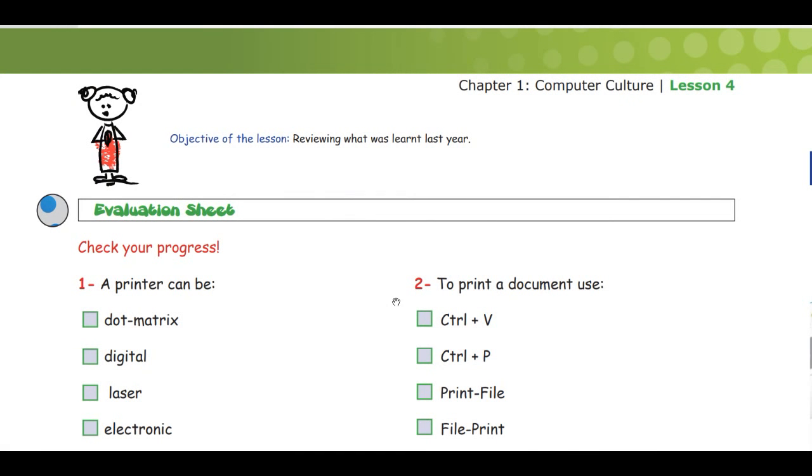This is Grade 4, Chapter 1: Computer Culture, Lesson 4. The duration of this lesson is for one period. The objectives of this lesson are to review what was learned this year in order to recapitulate and to check if all students master the skills of this chapter.